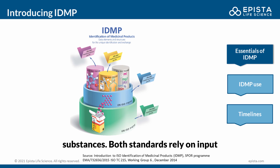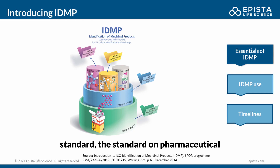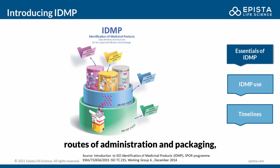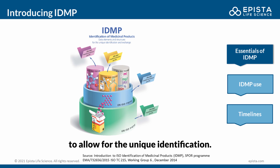Both standards rely on input from the other standards: the substance standard, the standard on pharmaceutical dose forms, units of presentation, routes of administration and packaging, and the one on units of measurements — to allow for the unique identification.